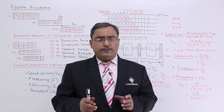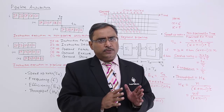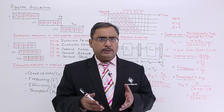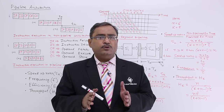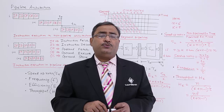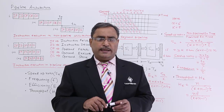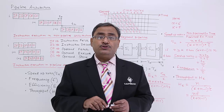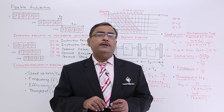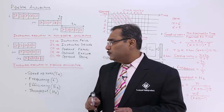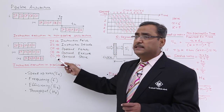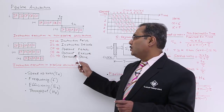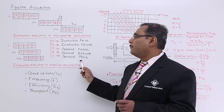The next phase: the instruction has been decoded, we know the meaning, and we have the data on which the instruction can work. So the fourth phase will be instruction execute. After execution, the result is produced, and the last phase will be store result. So we have five phases: instruction fetch, instruction decode, operand fetch, operand execute, and operand store.